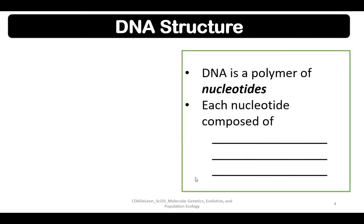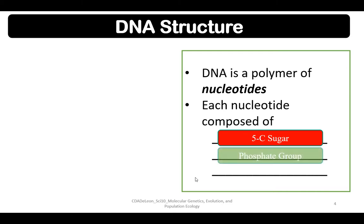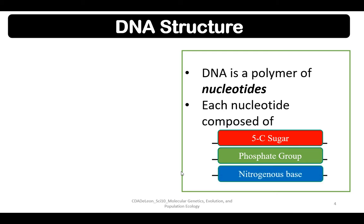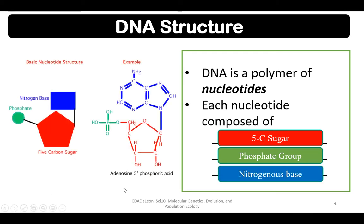In terms of DNA structure, DNA is a polymer of nucleotides. Each nucleotide is composed of a five-carbon sugar, a phosphate group, and a nitrogenous base. As you can see in the illustration, this is a nucleotide — the five-carbon sugar: one, two, three, four, five — and a phosphate group.